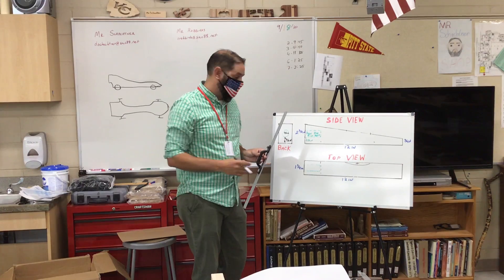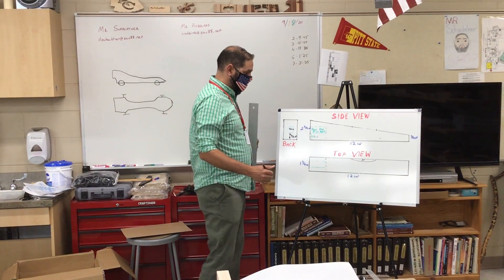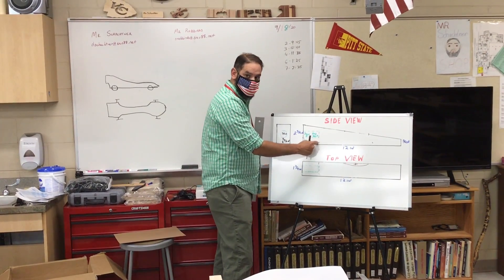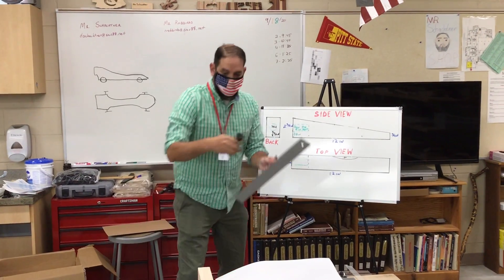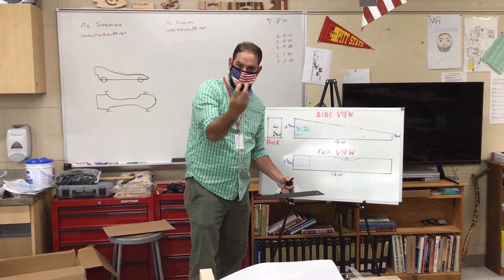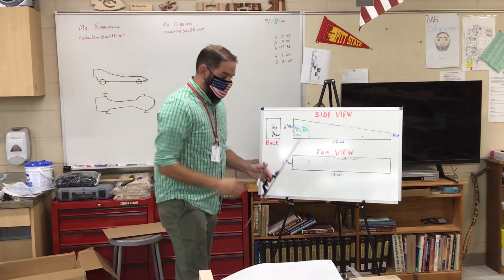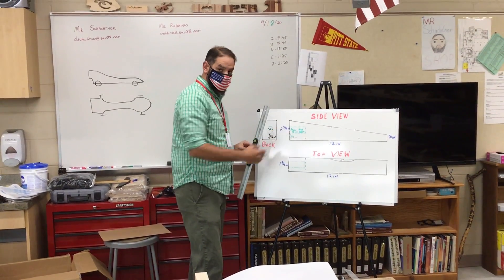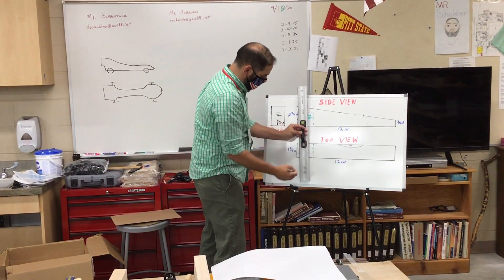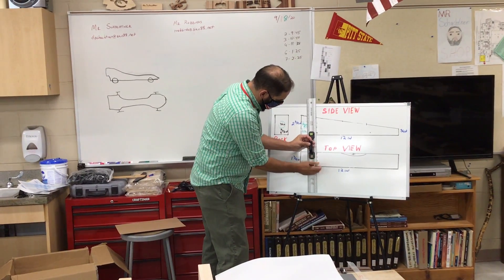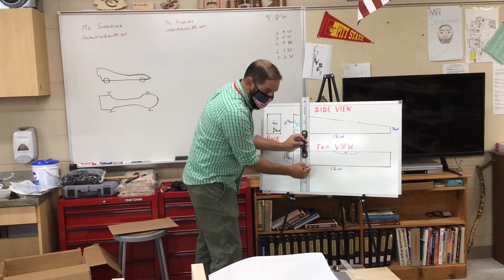Another thing to consider is where the wheels are going to go. On your design, what I want you to do for the wheels is just add a dot where you want the wheels to go. What we're going to do is drill through the wood and put an axle through the wood just like that to mount the wheels. Now, where that axle is will have consideration for both views in our design. So if I decide to put my axle right here, and I'm looking at the car from the top, that axle has to go all the way through the block — I'm just going to translate that point down here with a dotted line.